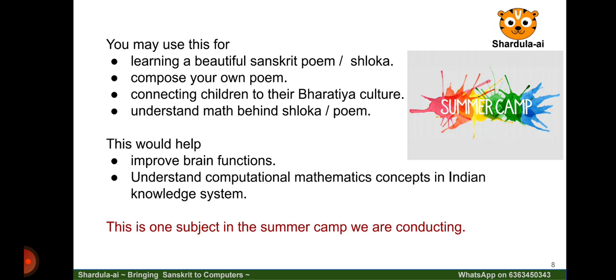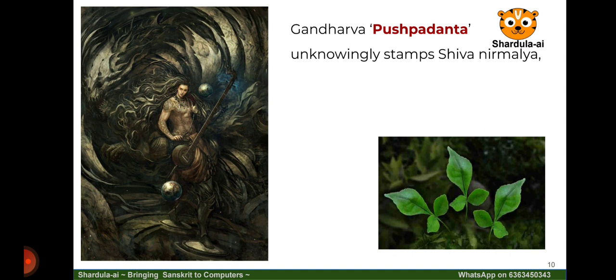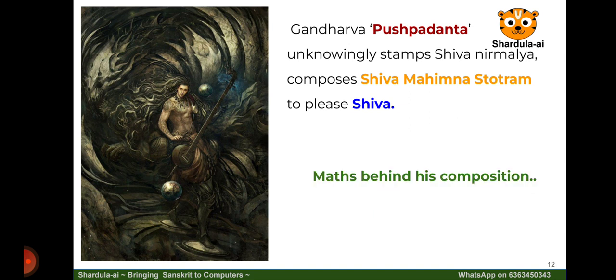This is one of the subjects we would be covering in the summer camp for children, covering the simpler aspects so that it's fun for them. As an example, in this poem, we are going to take a shloka composed by Pushpadanta, who is a Gandharva. He unknowingly stamps on Shiva Nirmalia, feels sorry, and composes Shiva Mahimna Stotram to please Bhagawan Shiva. This is so melodious, and to understand why it is so famous, we will understand it through mathematics.